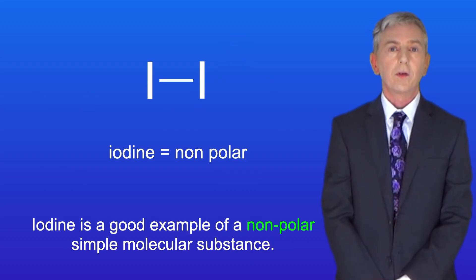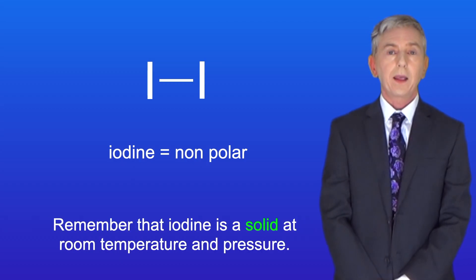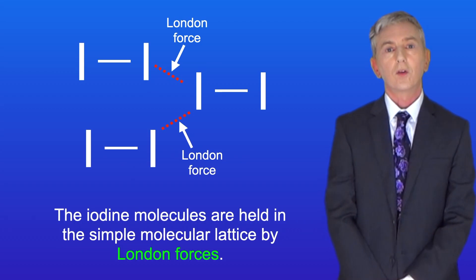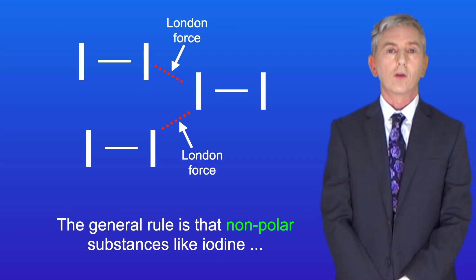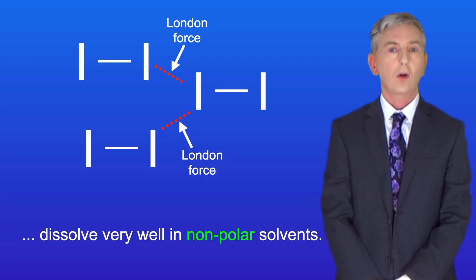Iodine is a good example of a non-polar simple molecular substance. Remember that iodine is a solid at room temperature and pressure and the iodine molecules are held in the simple molecular lattice by London forces. The general rule is that non-polar substances like iodine dissolve very well in non-polar solvents.